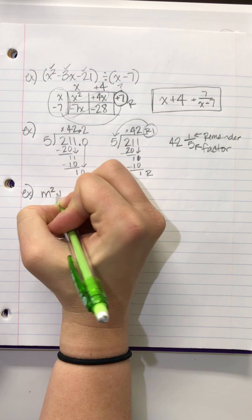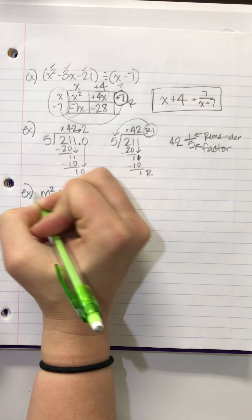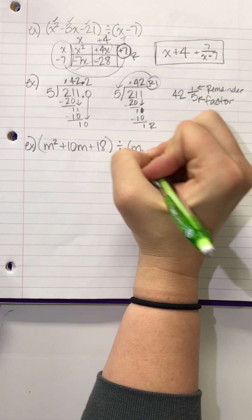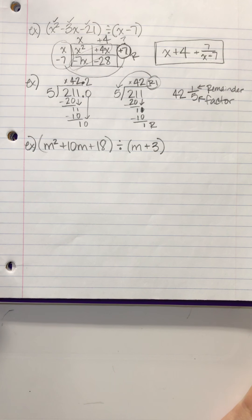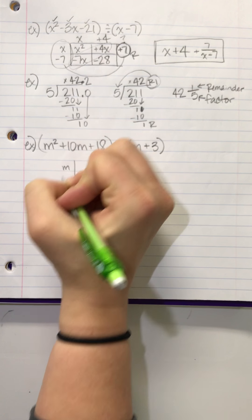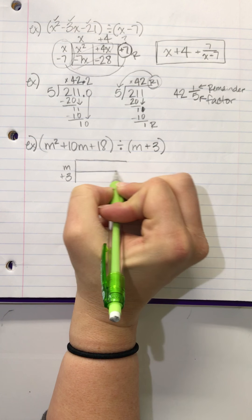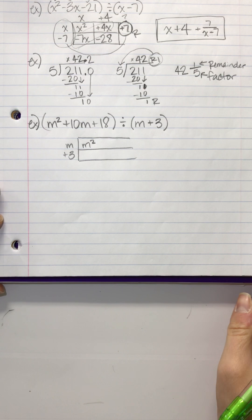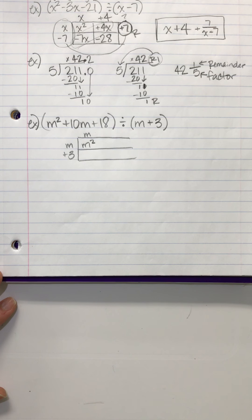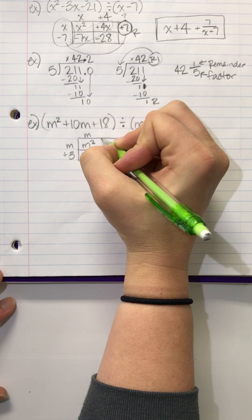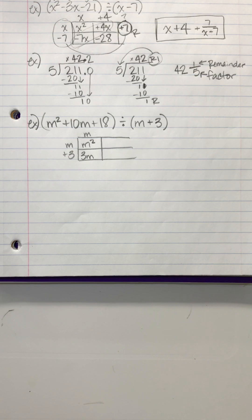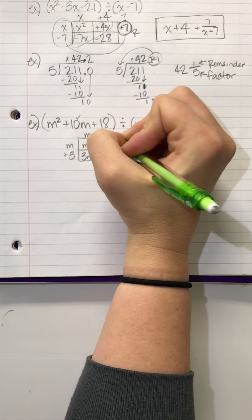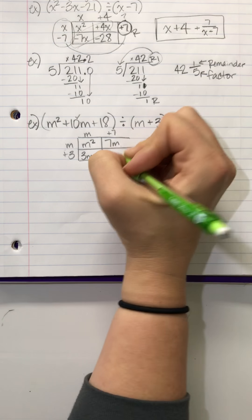How about m squared plus 10m plus 18 divided by m plus 3? I'm going to set it up with m plus 3 on the side. And I know I need m squared in that first box. How am I going to get m squared? I'm going to multiply by m with an m, which gives me 3m. I don't want 3m, I want 10m. So what do I still need? 7m. So then when I put the 7 up here, because m times 7 is 7m, that gives me 21.